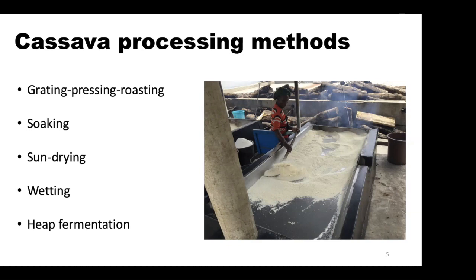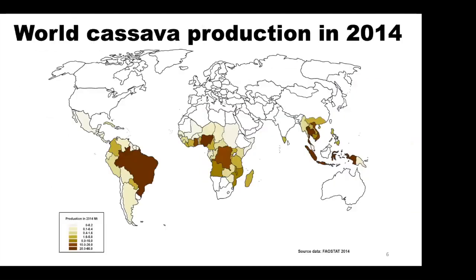Oftentimes, people don't follow these processes properly, so cyanide poisoning still exists. It might not be in the extreme case in most cases, but extreme cases do occur. Looking at cassava as an important staple in sub-Saharan Africa, over 50% of cassava production is coming from Africa, which means we have to tackle the challenges associated with cyanide in cassava.